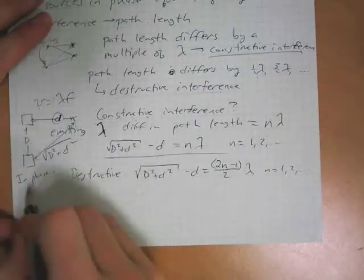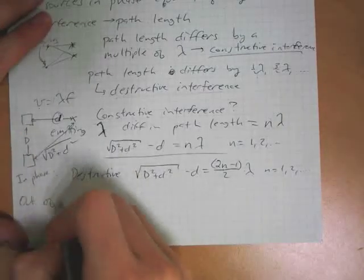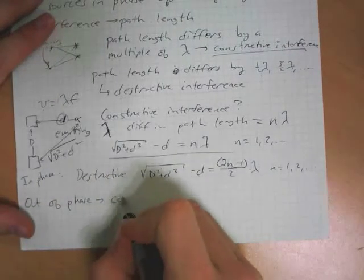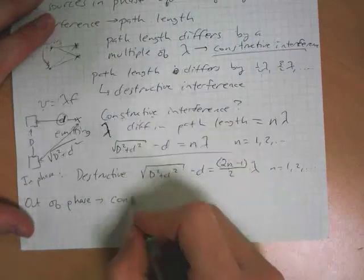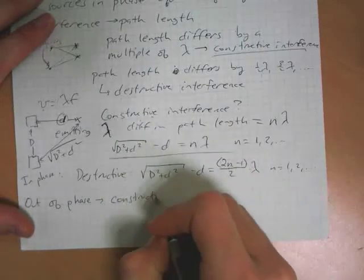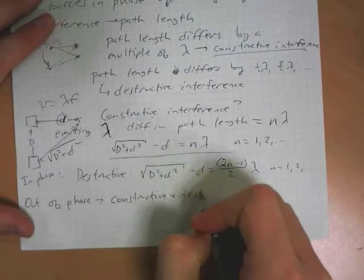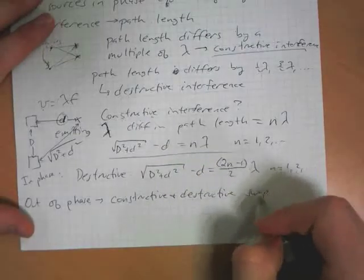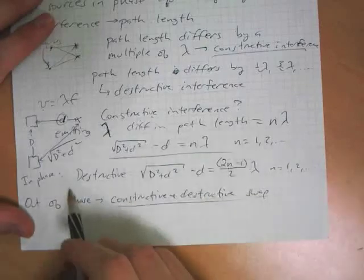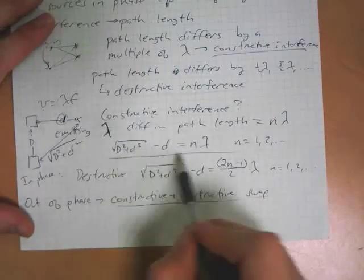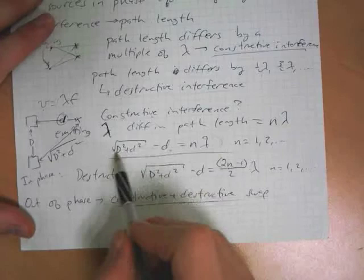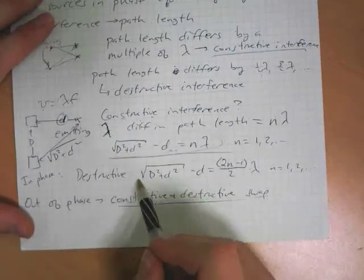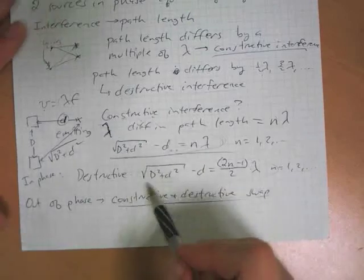If they are out of phase, then all that happens, as we saw in the little video, is that constructive and destructive swap. So if they are out of phase, then destructive interference would occur where the distance satisfies this equation, and constructive interference would occur where the distance satisfies this equation. So that's all that happens there.